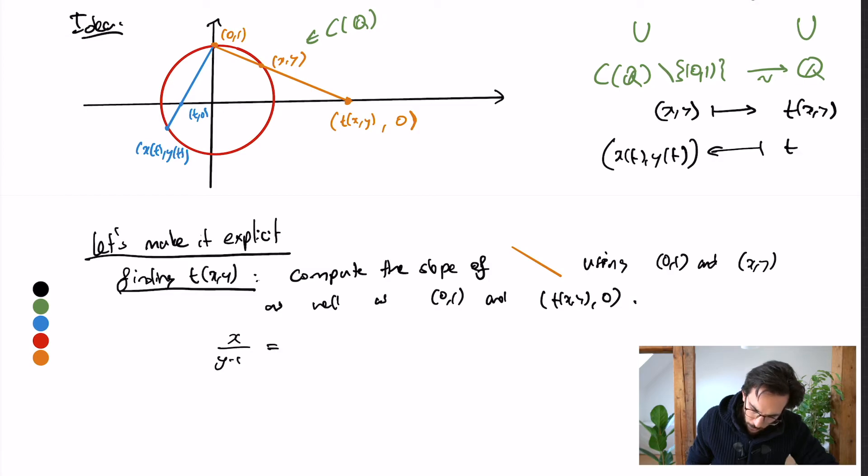And then the second way of computing the same slope gives me t(x, y) divided by minus 1. In other words, t(x, y) is the rational expression x over (1 minus y). Well, this formalizes our initial observation that t has to be rational if x and y are rational.